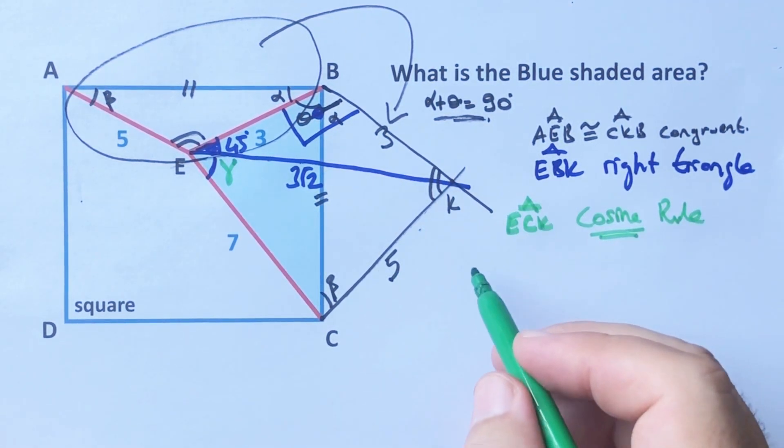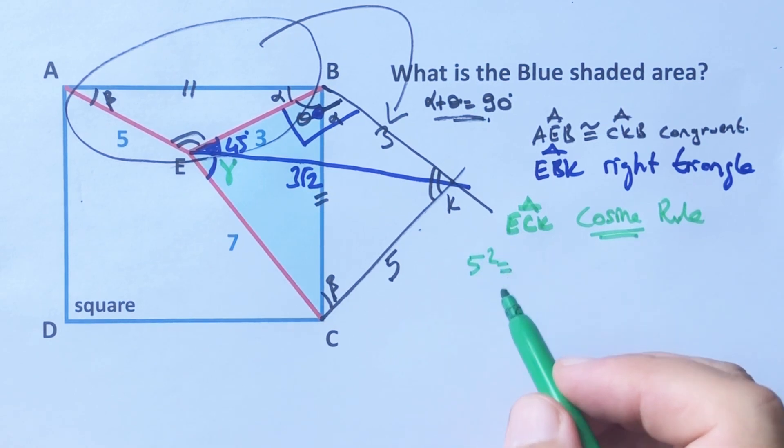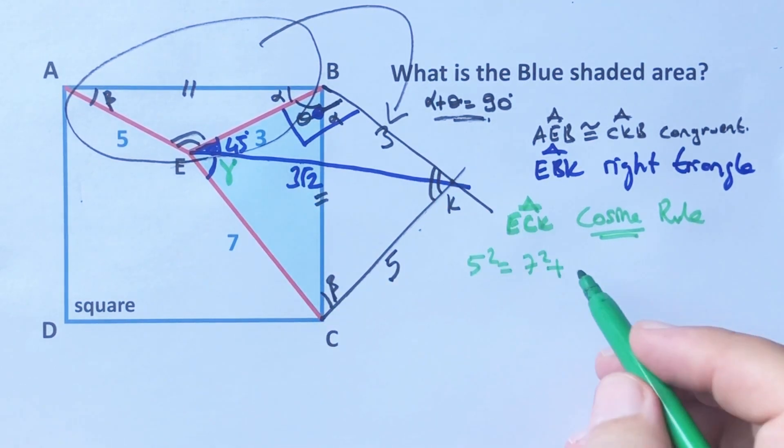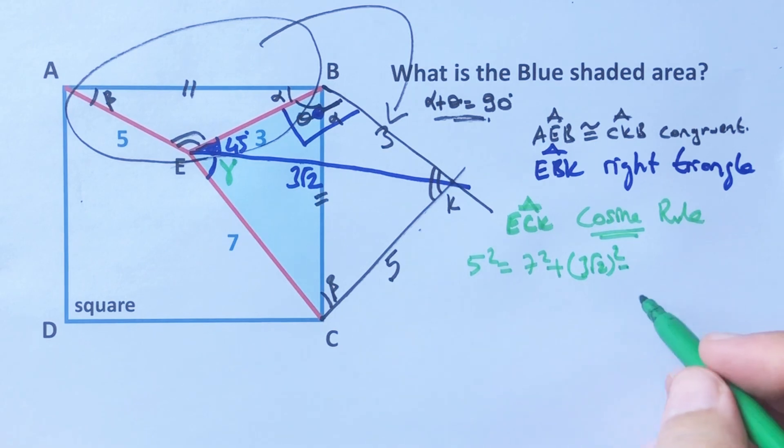5 squared equals 7 squared plus 3 root 2 whole squared minus 2 times 7 times 3 root 2 times cosine gamma.